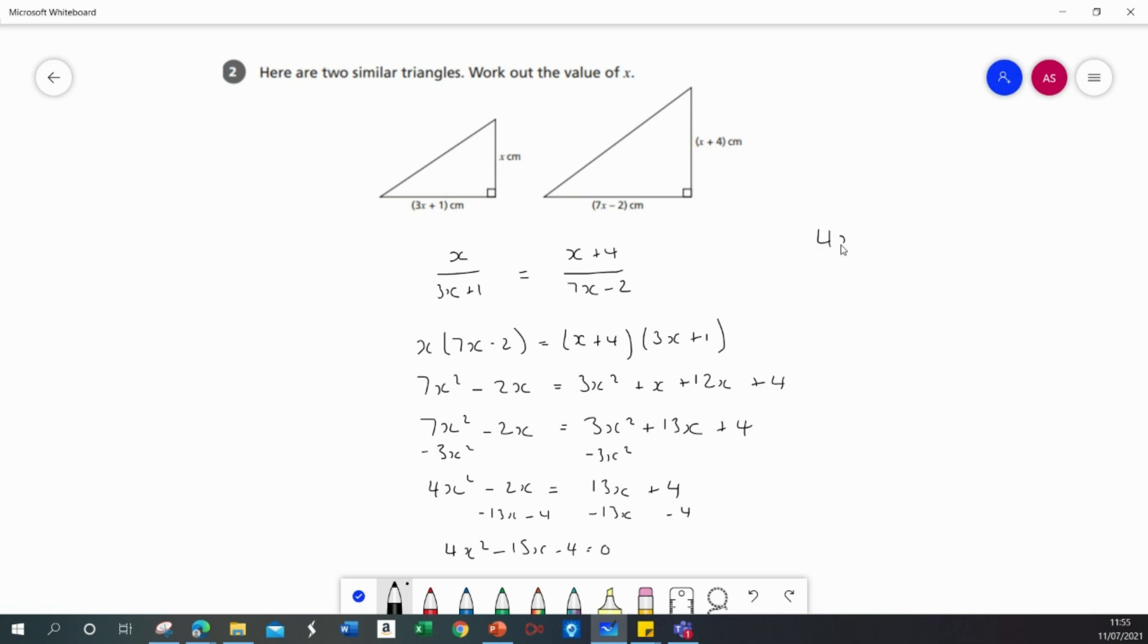Now this is in a form that I can now solve and in fact this quadratic will factorize. So into two brackets I've got x minus 4 and 4x plus 1 equal to 0.